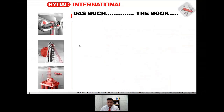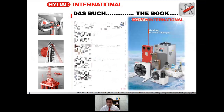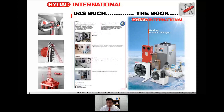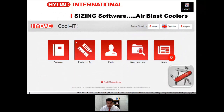Another thing I'd like to advise everybody: if you have the sizing software, you should also have what our colleagues in Germany call the DAS book — we call it the book in English. You should download it; it's definitely a good resource. It has our full current portfolio and is available on our web page as a PDF download. Together with the book and CoolIT, you are all set to find a cooler and be ready for purchase.